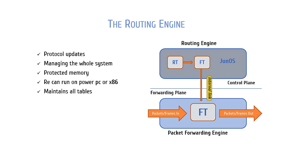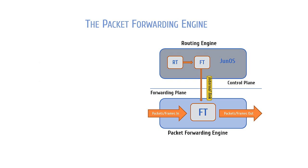Even though all Junos devices share a common codebase, the actual hardware components that compose the control and forwarding planes will vary quite a bit between device platforms. The PFE will usually run on its own hardware within the device, and it's responsible for forwarding transit traffic through the device. Not all Junos devices have separate hardware for the PFE, like some of the smaller less powerful devices, but most all of the larger devices do. Because the RE provides the intelligence of the platform, the PFE can simply carry out its instructions to forward frames and packets with predictable performance and stability. In other words, the PFE doesn't have to think about what it's doing — the RE has already done that, so the PFE can simply perform the action.